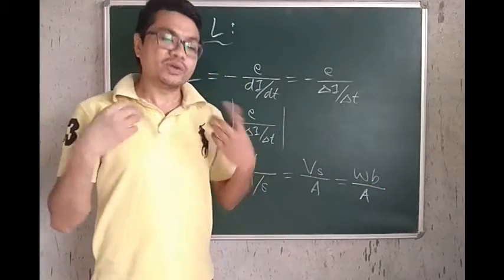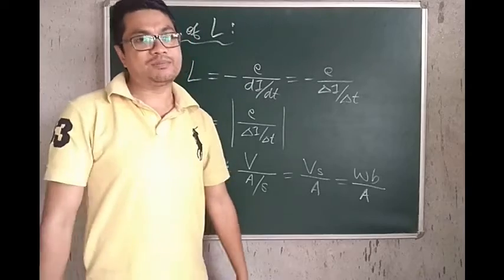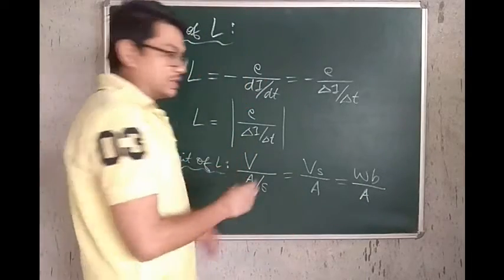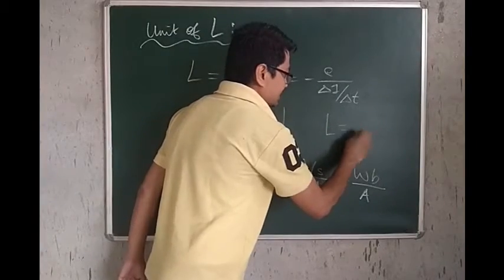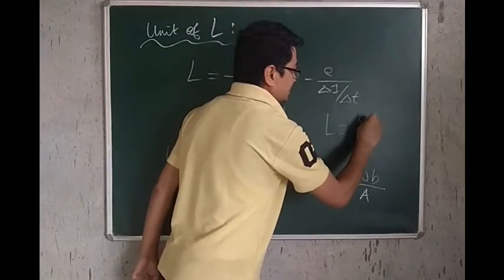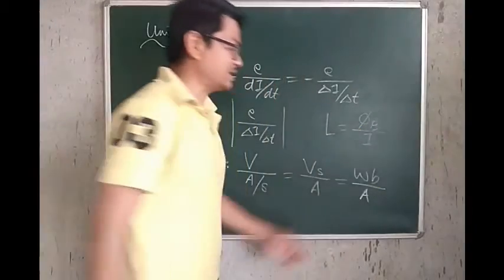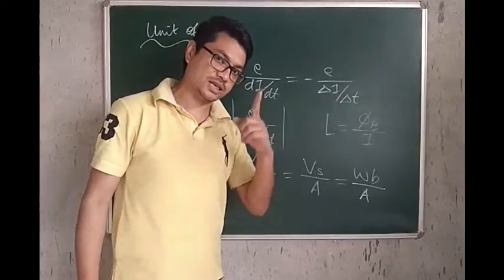Where Weber is the unit of magnetic flux, mind you. So, we get this unit from another definition of self-inductance also, so to say. Self-inductance was the magnetic flux divided by the current. This was the initial definition of self-inductance we started with.